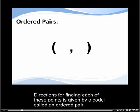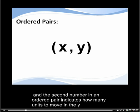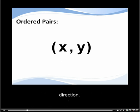Directions for finding each of these points is given by a code called an ordered pair. The first number in an ordered pair tells you how many units to move in the x direction. And the second number in an ordered pair indicates how many units to move in the y direction.